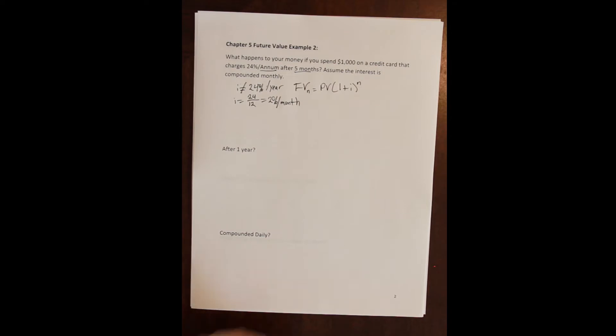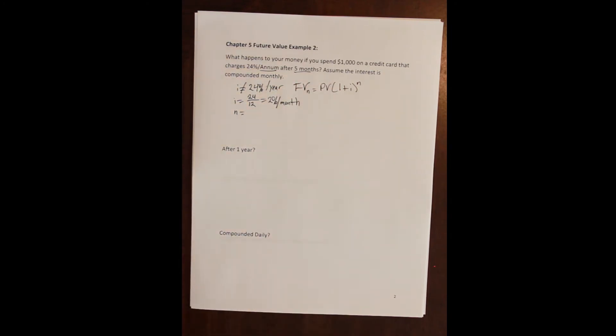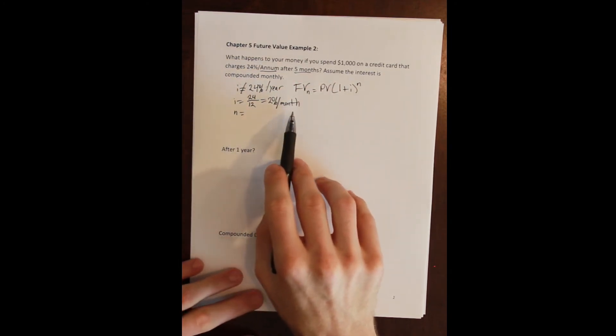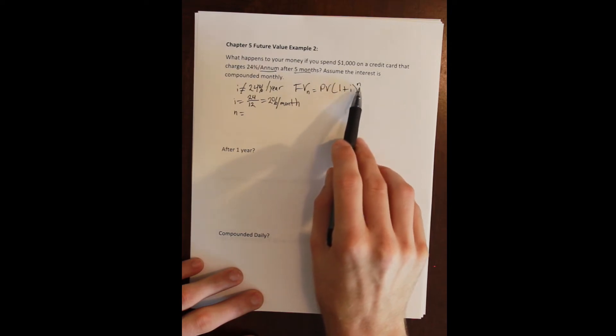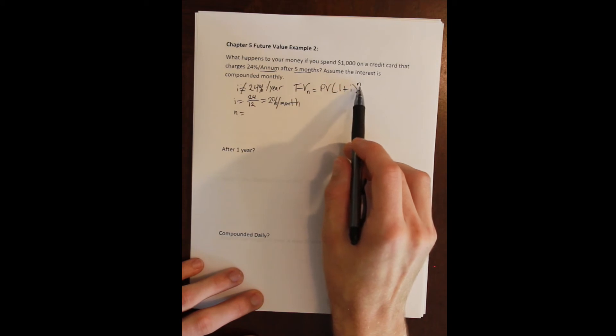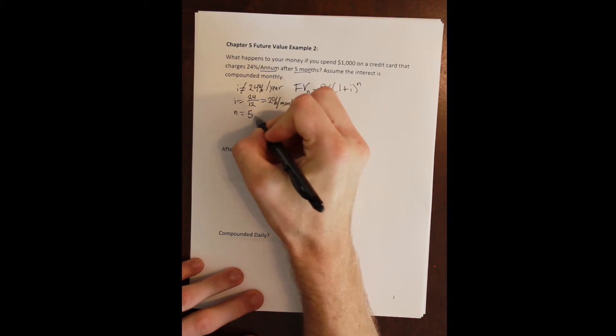And our n here needs to be in the compounding period, meaning the compounding period for the rate needs to be the same as the number of periods. Here n is not the number of years, it's the number of periods. And so here if we're going to use a monthly rate then we're going to leave the money on the credit card for a number of months, here five months, and our present value is a thousand.